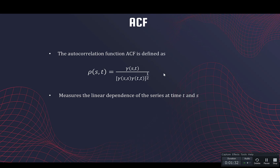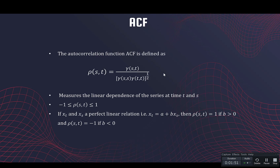Just like the correlation, this autocorrelation function also measures the linear dependence of the series at the two time points, and it lies between minus one and plus one. If x_t and x_s have a perfect linear relation, their correlation is going to be one. If b is greater than zero there is a positive relation, so the correlation will be plus one; if b is negative there is a decreasing relation, so the autocorrelation function will have a value of minus one.